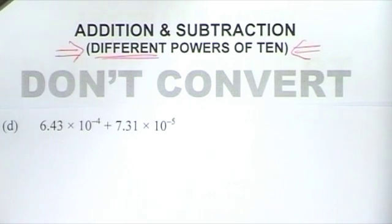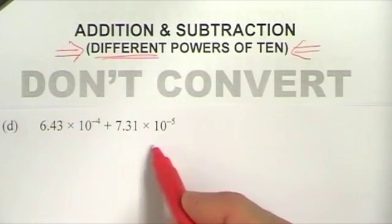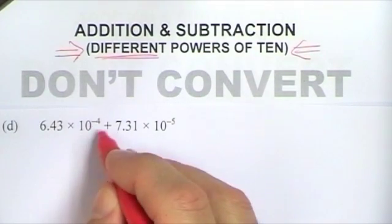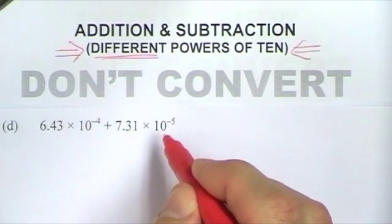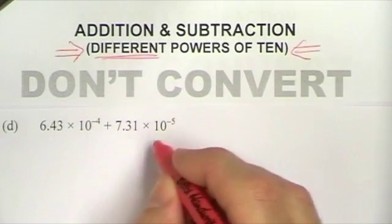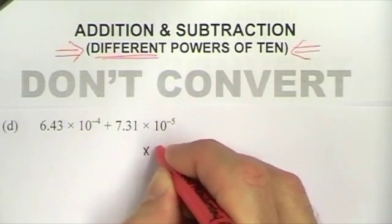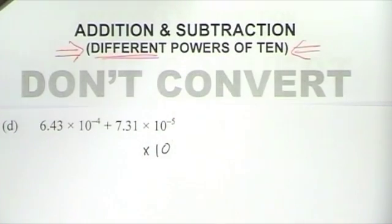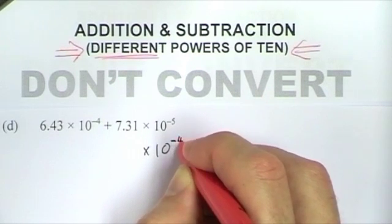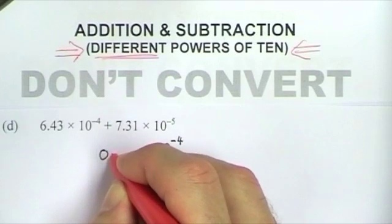In this last question I've got negative powers of 10, but exactly the same principle applies — I can only add or subtract numbers if they're at the same power of 10. We have a 10 to the minus 4 and a 10 to the minus 5, so I've got to change them so their largest power of 10 matches. The largest power of 10 is minus 4. This is where some people get confused because they think minus 4 is less than minus 5, but on the number line, minus 4 is actually bigger than minus 5. So I'm changing the second number to a 10 to the minus 4 — I've made it a power of 10 bigger, so the first part must decrease by a power of 10 to become 0.731.